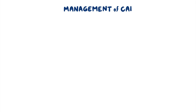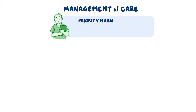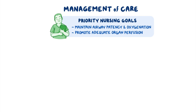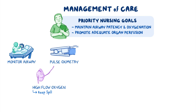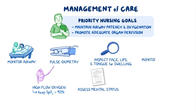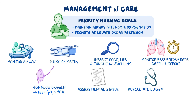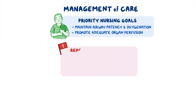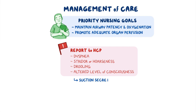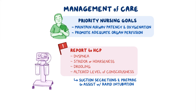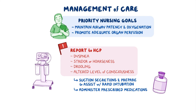Now let's talk about nursing care for a client with anaphylactic shock. Your primary nursing goals are to maintain airway patency and oxygenation and promote adequate organ perfusion. Begin by monitoring your client's airway and oxygenation by instituting pulse oximetry, and administer ordered high-flow oxygen to keep SpO2 greater than 90%. Inspect their face, lips, and tongue for swelling, and assess their mental status. Monitor respiratory rate, depth, and effort, and auscultate lung sounds. Immediately report dyspnea, stridor, hoarseness, drooling, or signs of decreased oxygenation such as altered level of consciousness. Suction secretions, and prepare to assist with rapid intubation as indicated. Administer prescribed medications such as epinephrine to help mediate the allergic reaction.